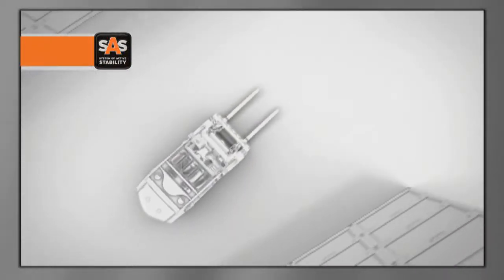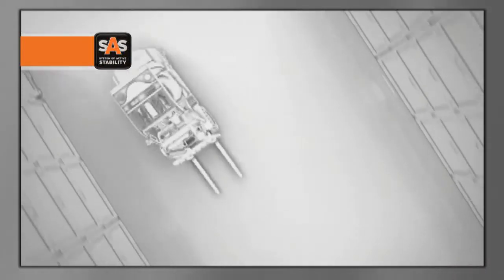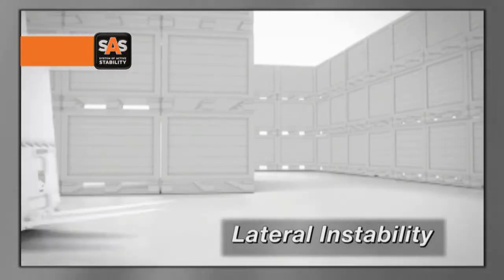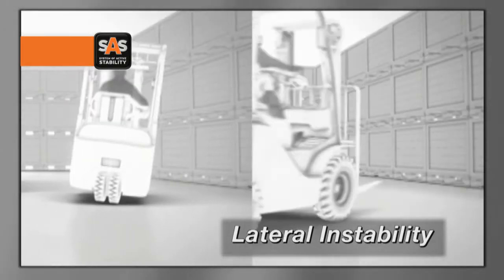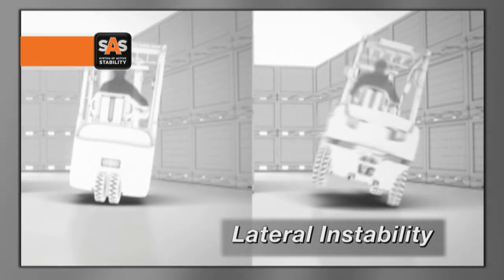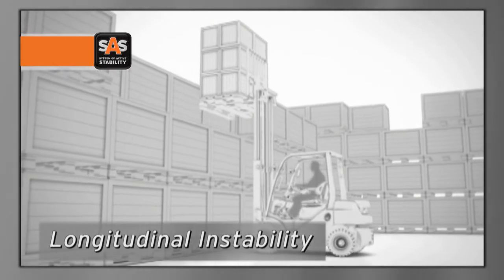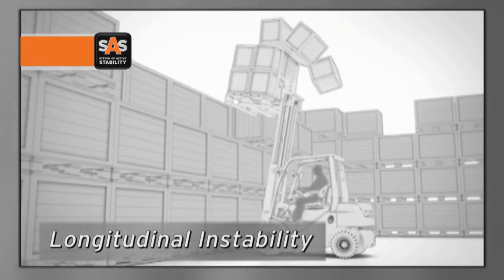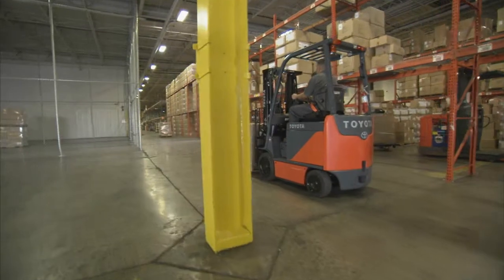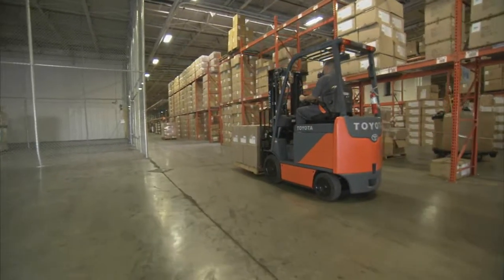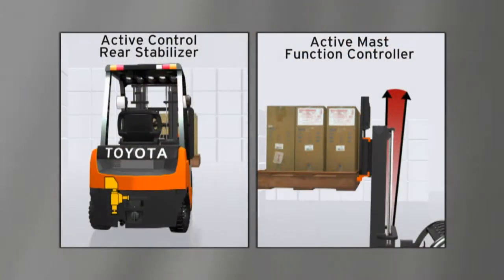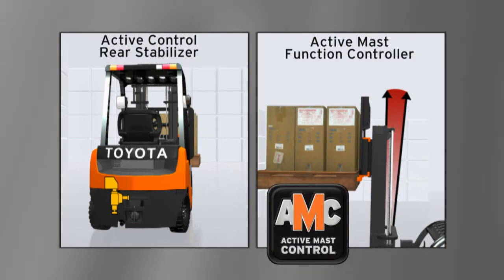SAS focuses on two areas of lift truck instability: lateral instability, or side to side, and longitudinal instability, front to back. Toyota SAS reacts through two key systems, the Active Control Rear Stabilizer and the Active Mass Function Controller.